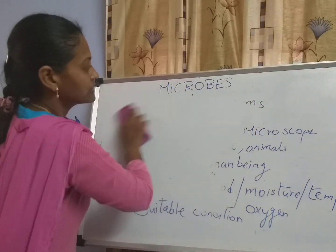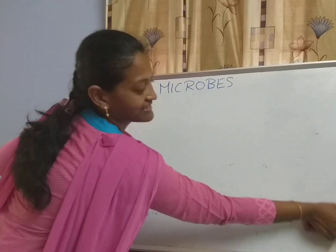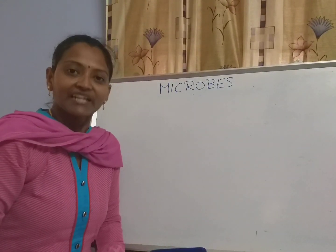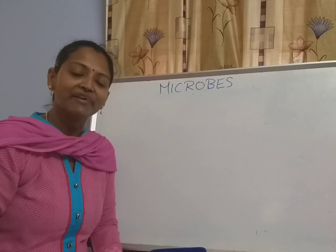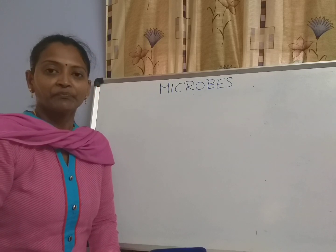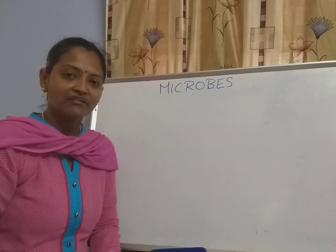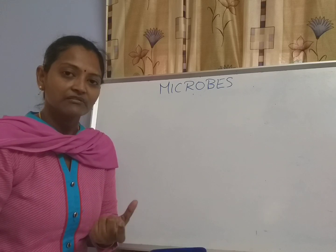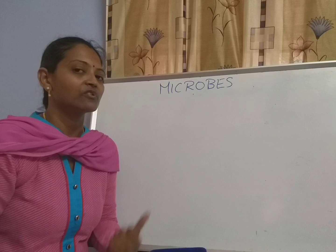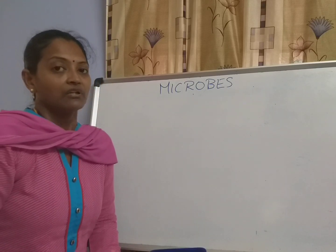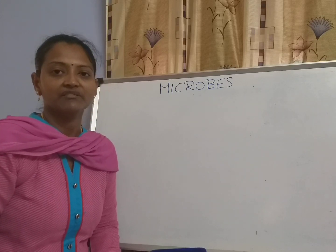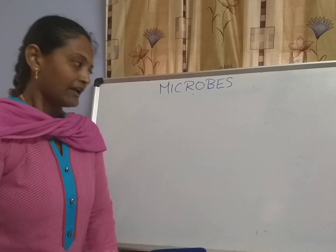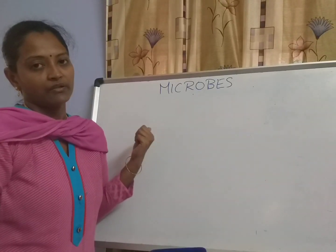They grow very fast when they find suitable conditions. For example, our mouth is a very suitable condition for microbes to grow very well — it grows very rapidly there. That's why if you are not brushing your teeth properly, you will get teeth decay. So brush your teeth regularly, twice a day, to avoid tooth decay.